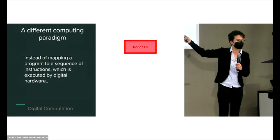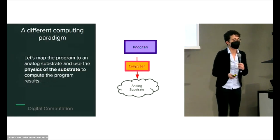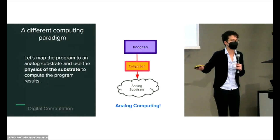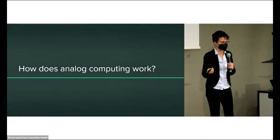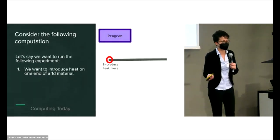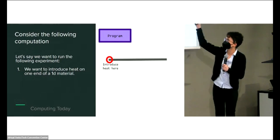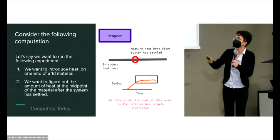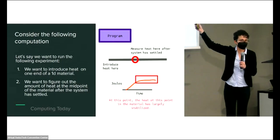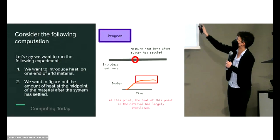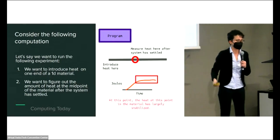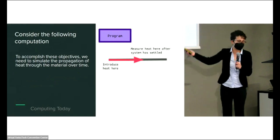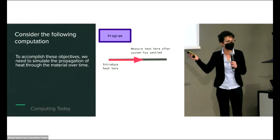What if we adopt a different computing paradigm? How about instead of mapping a program to a sequence of instructions, which is executed by digital hardware, let's map a program to an analog substrate and use the physics of the substrate to compute the program results. This is analog computing. The best way to explain this is by example.